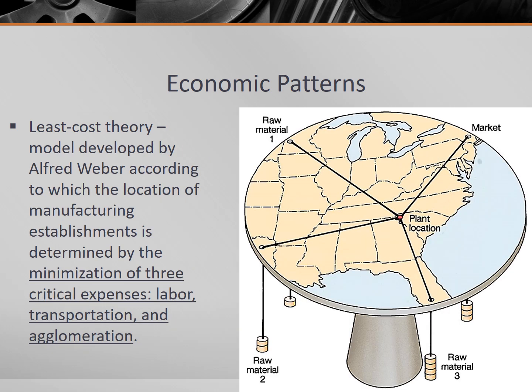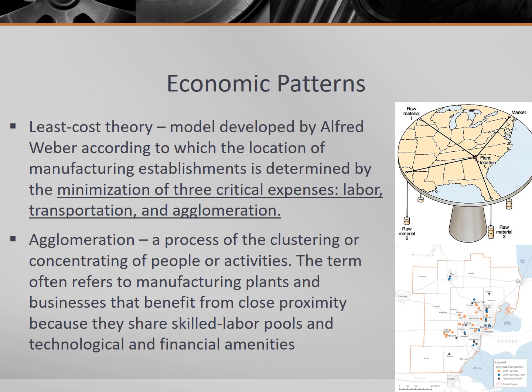In other words, businesses weigh the cost of labor, the cost of transportation, and the benefits of agglomeration to determine where to locate a factory. The primary focus, as the name implies, is to keep product costs as low as possible in order to maximize profits. Tonight we will examine each of these three costs, as well as a few others that factory owners would consider.